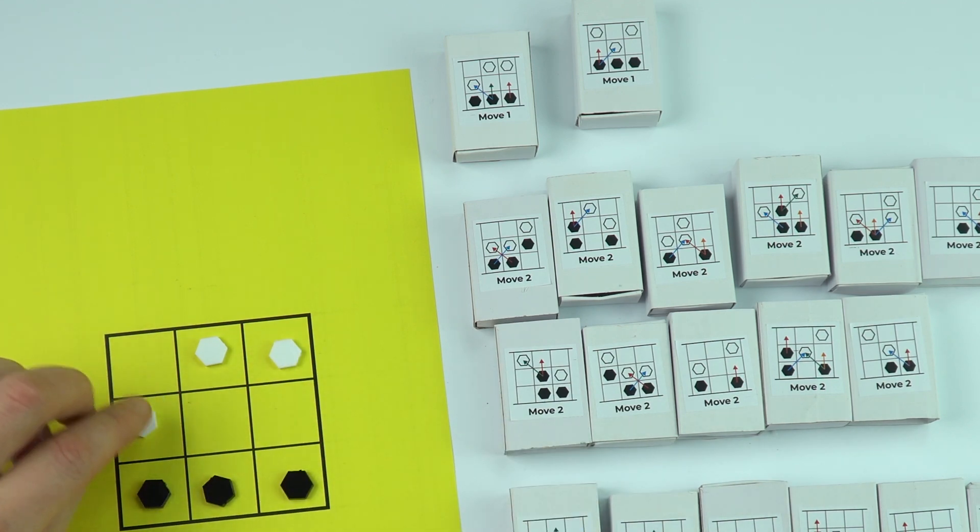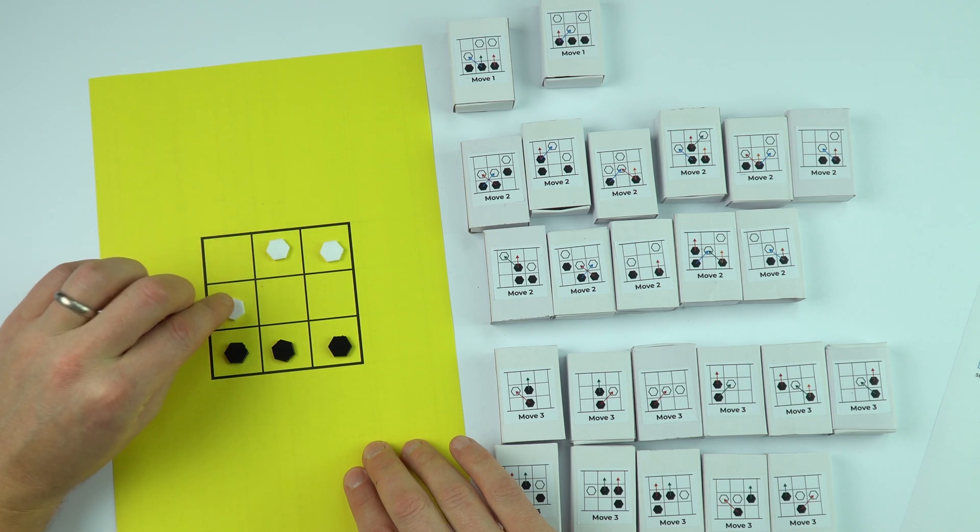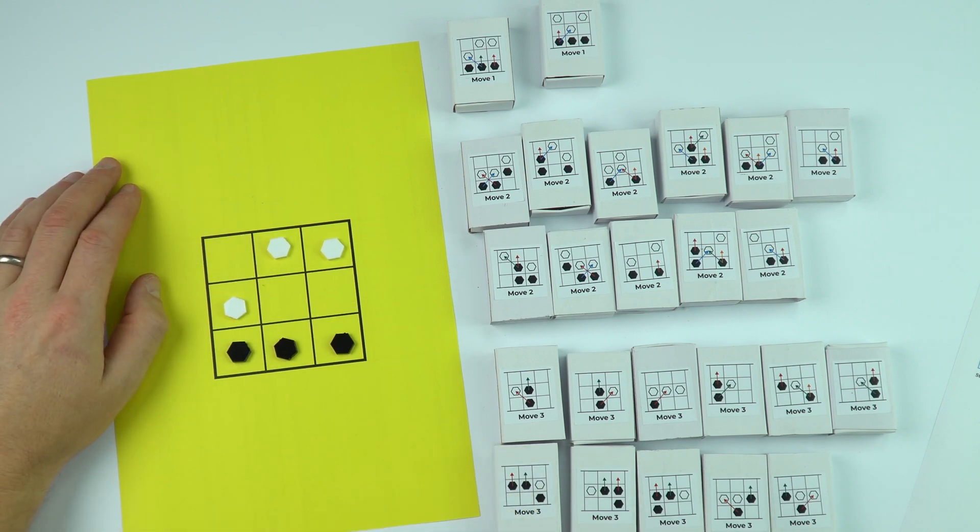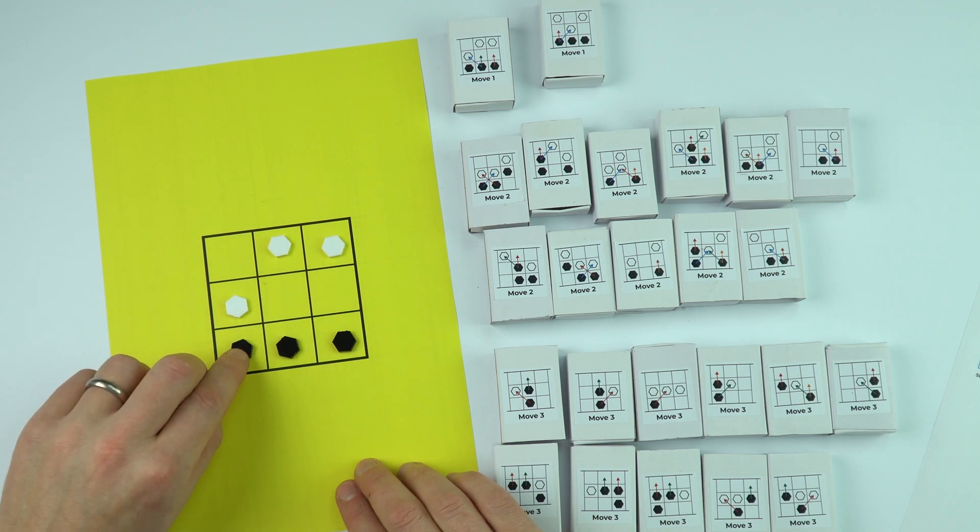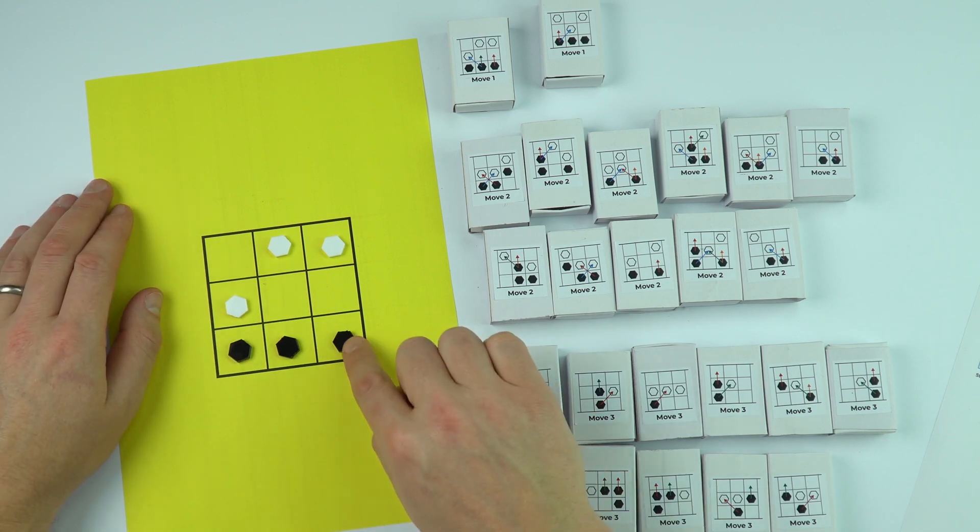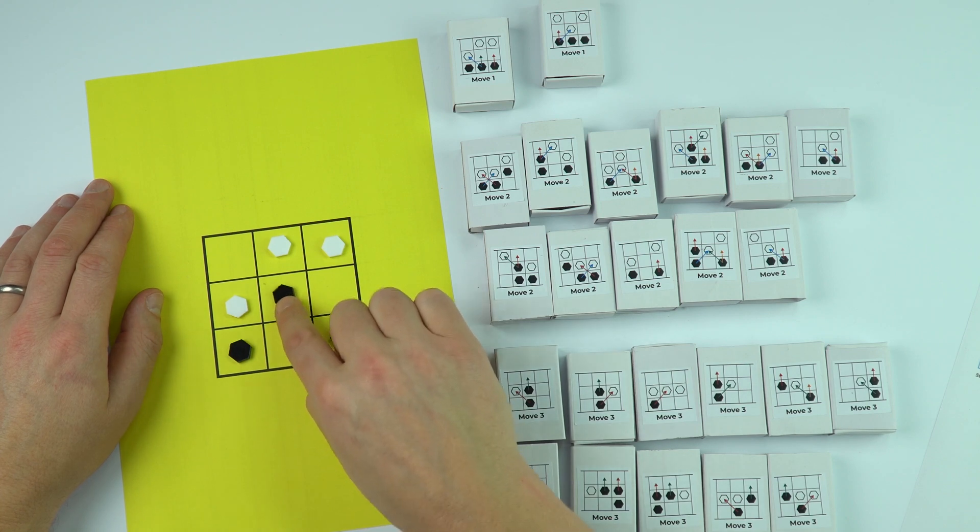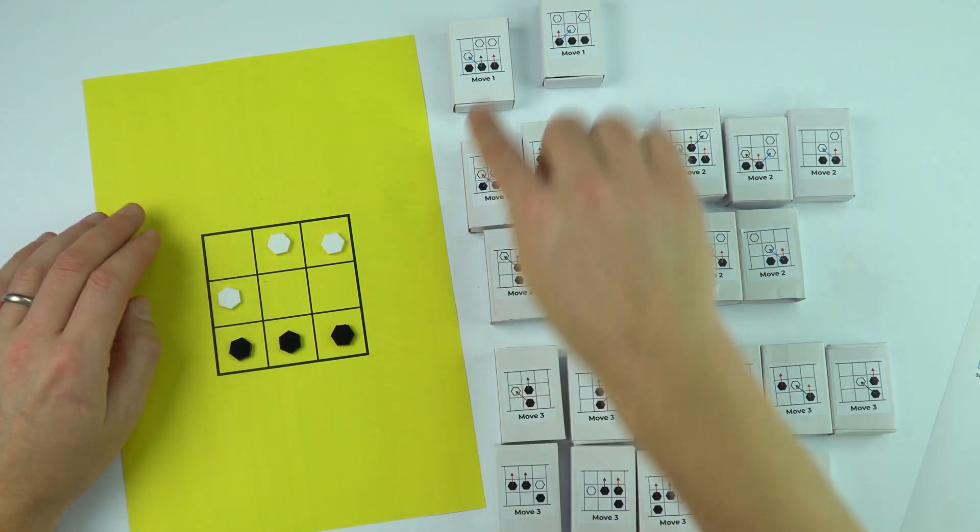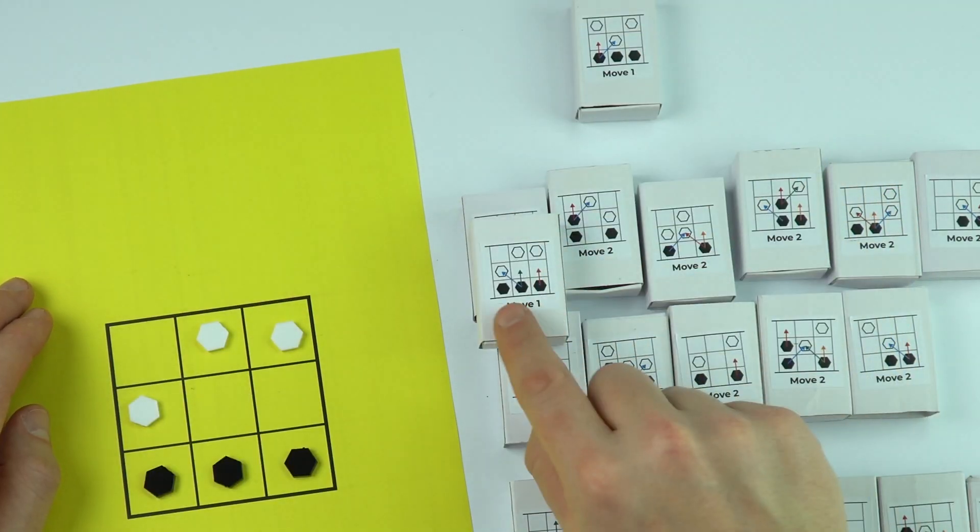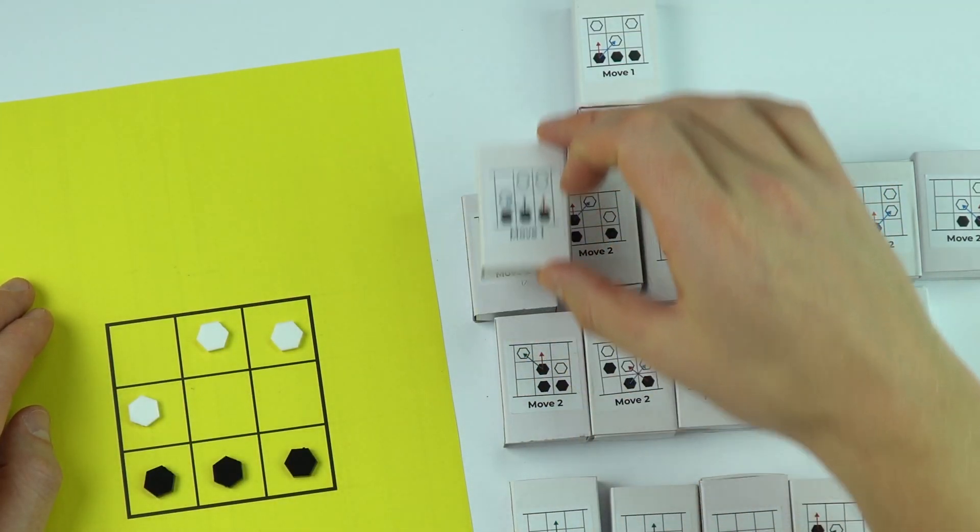Let's imagine my move is I'm going to move this one here forward. Now there are three possible moves that could happen. This pawn can't move at all, so it's stuck. This one here could move forward one space, this one could move forward one space, or this one could take that piece. We have the three possible moves on the box over here.